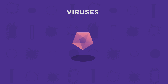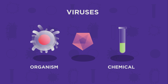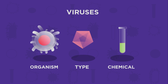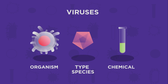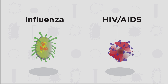As we just saw, viruses aren't made up of cells. In fact, they aren't really living — they are halfway between a living organism and a chemical. Because they aren't living, we say there are different types of virus rather than different species of virus. Some common types of viruses are influenza and HIV or AIDS.